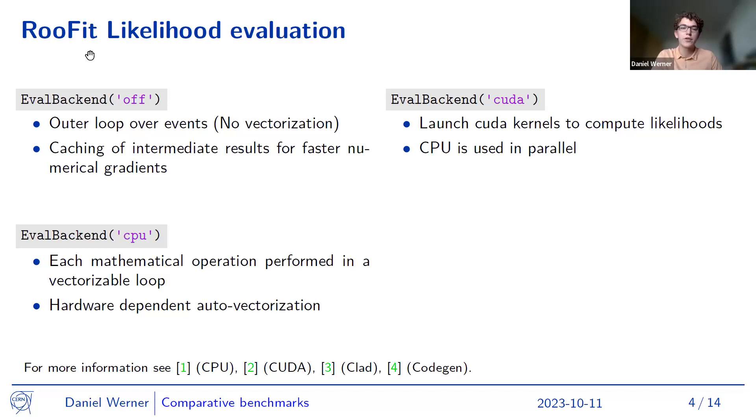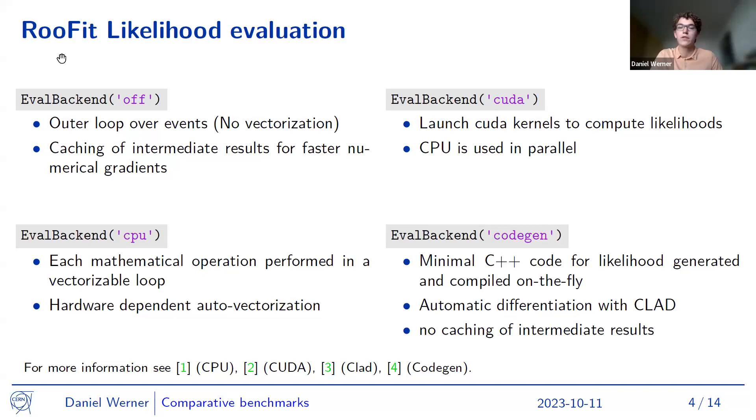And the newest backend that was added to ROOT is the codegen backend. In this backend, first some minimal C++ code for the likelihood is compiled on the fly. And then through CLAD, automatic differentiation of this minimal code of these functions can then be performed that can save time later on when trying to find a gradient, for example, of our likelihood for minimization or maximization. And of course, in codegen, there's no longer any caching of intermediate results as we just treat the computation graph differently.